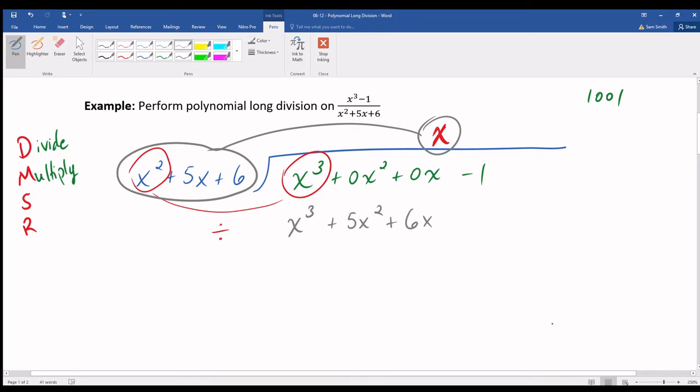S stands for subtract. Subtract what? Subtract the thing that you just multiplied by the dividend. Subtract x cubed minus x cubed, result 0. Subtract 0x squared, subtract 5x squared, result negative 5x squared.